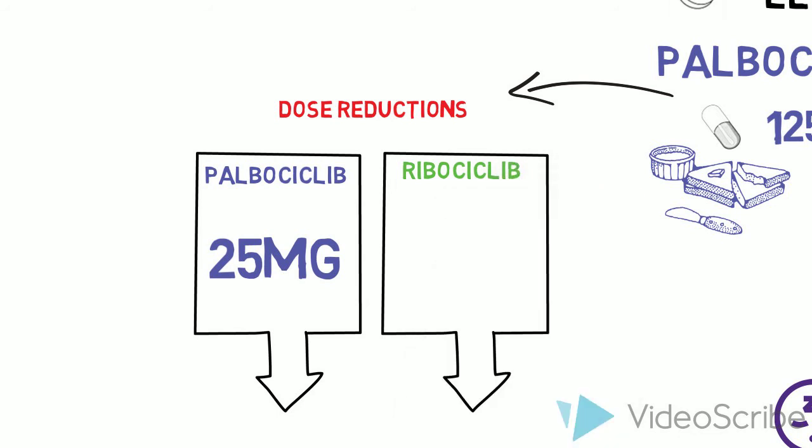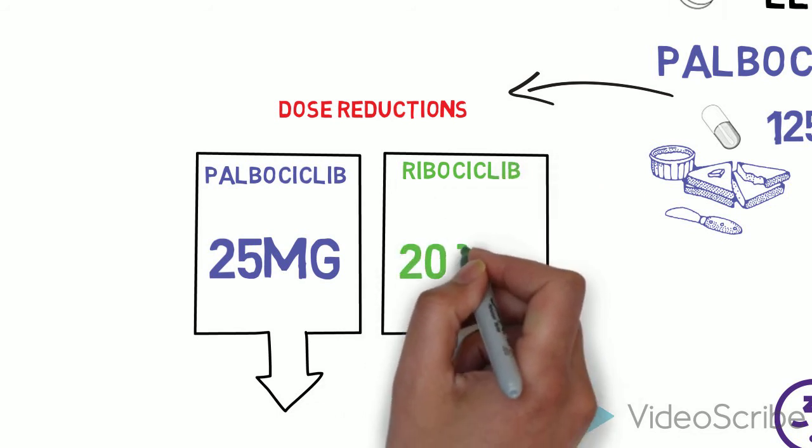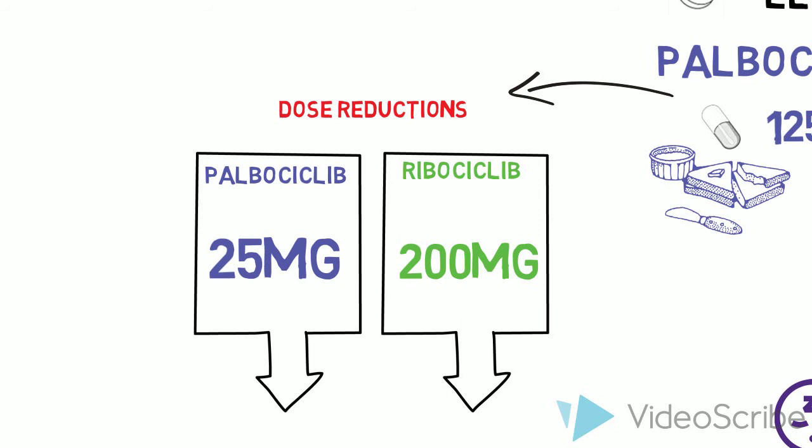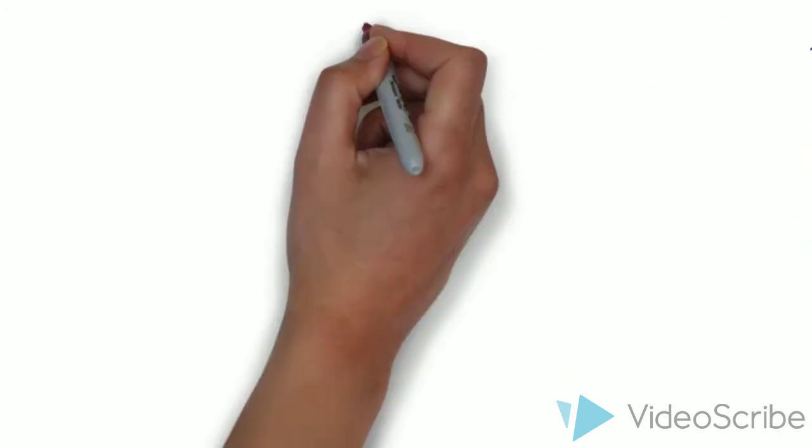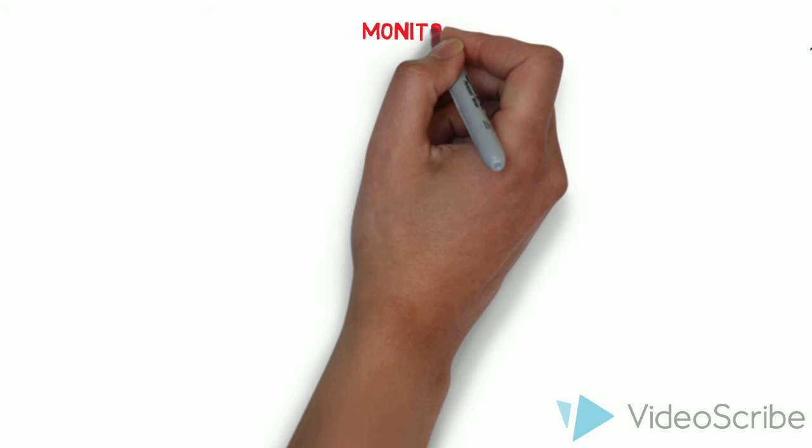Ribocyclib is reduced by taking two 200mg capsules to get a 400mg dose or one 200mg capsule to get a 200mg dose. Again dose reductions are not normally made mid-cycle.